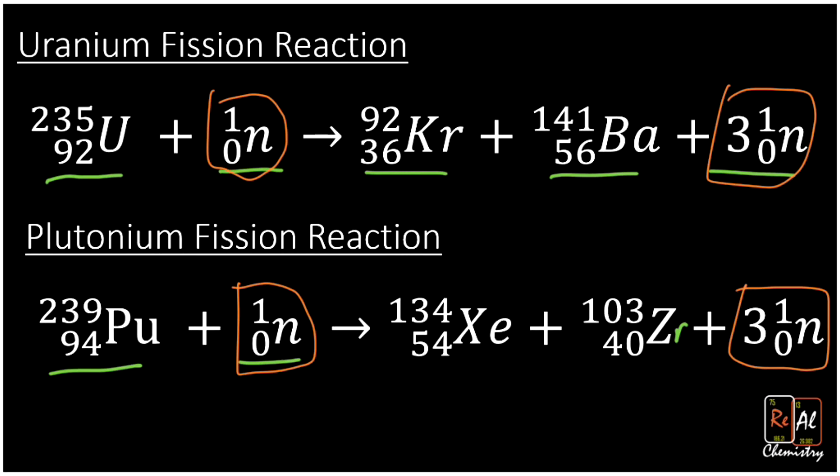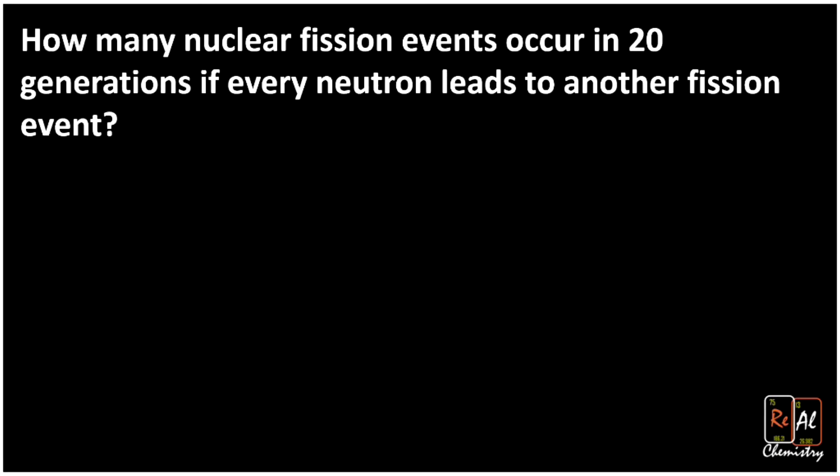One way to see how powerful this chain reaction is—remember, each time energy is being released—is to think about what happens as we get more generations of this nuclear event. Here's a question: How many nuclear fission events occur in 20 generations if every neutron leads to another fission event? The key is if every neutron leads to a fission event, you actually double how many fission events you have every generation.